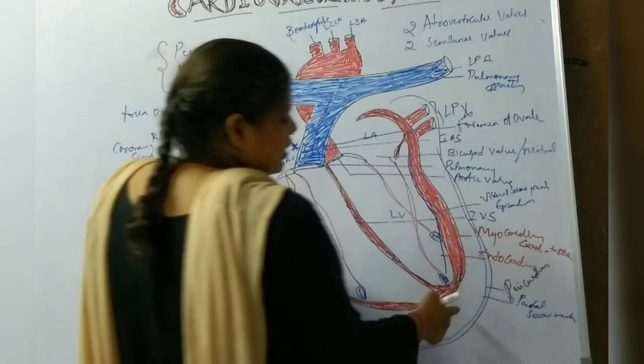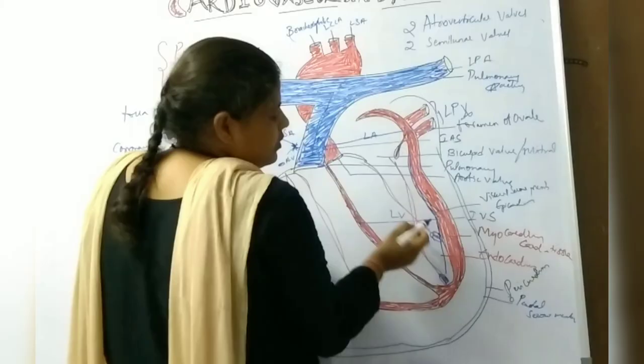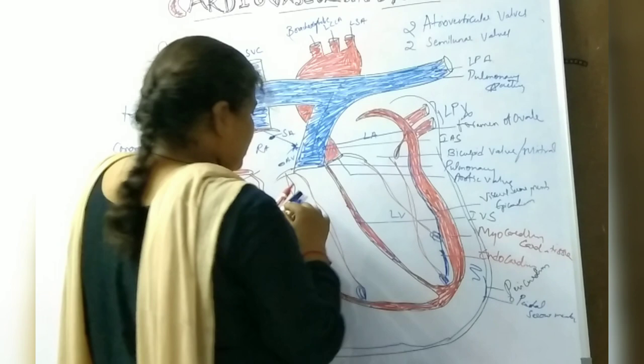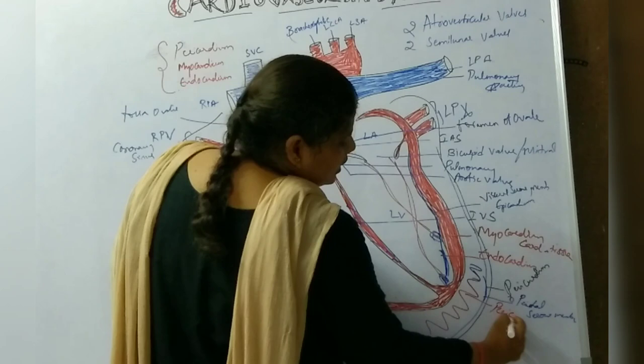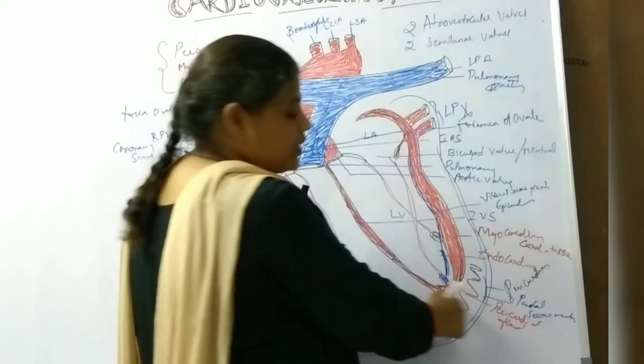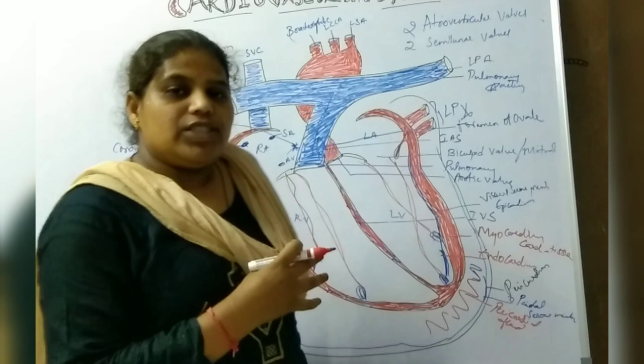Between the visceral serous layer and the parietal serous layer, there is a cavity known as the pericardial cavity, which is filled with pericardial fluid.